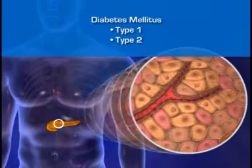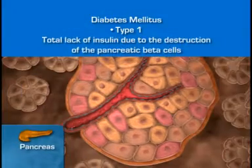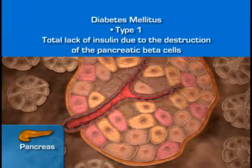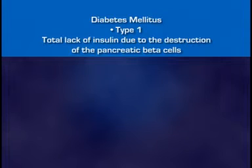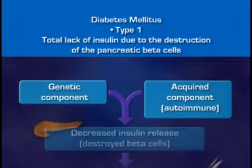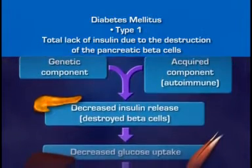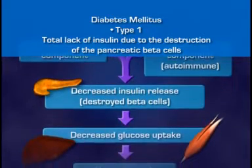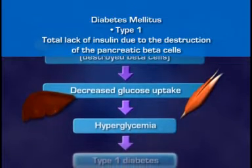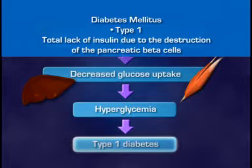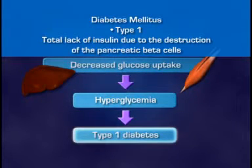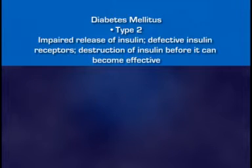Diabetes mellitus is currently classified into two primary types: type 1 and type 2. Type 1 diabetes is characterized by a total lack of insulin caused by the destruction of the pancreatic beta cells. Type 1 is thought to arise from interaction between a genetic component and an acquired or environmental component, predominantly in response to an autoimmune process. Type 1 diabetes probably develops over the course of years, with beta cell destruction happening well before the disease is diagnosed. Diagnosis is usually in childhood, and because it results in virtually absolute insulin deficiency, type 1 diabetes is treated with insulin injections.